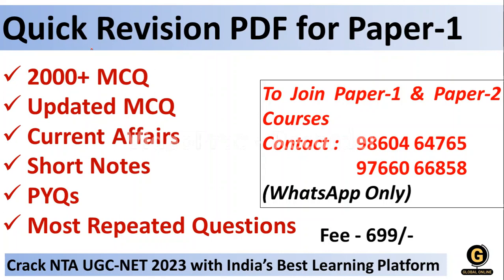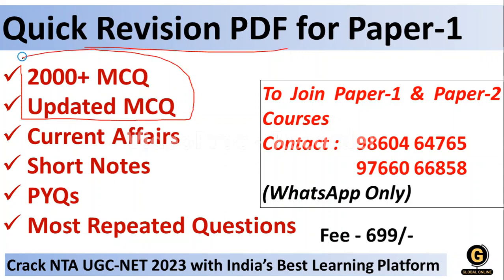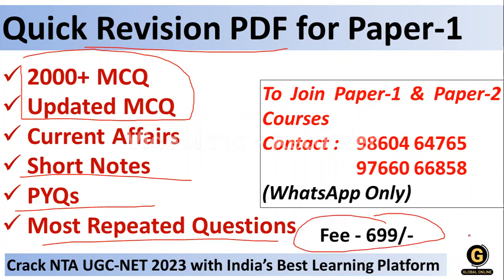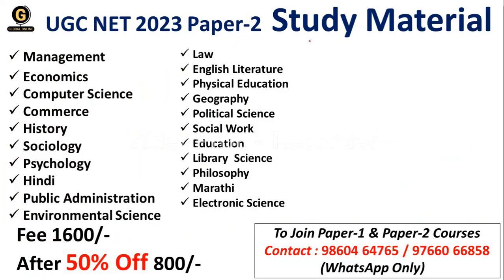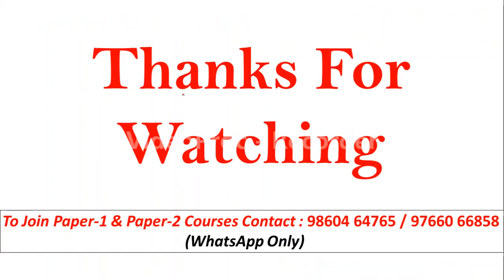Global Online has come up with a Quick Revision PDF for Paper One — 2000 plus updated current affairs MCQs, short notes on all units, previous year questions, and most repeated questions, all for a one-time payment. Download the Global Online app from the Play Store or contact the numbers on screen. Global Online also provides study material for Paper Two with notes and MCQs in all subjects. Thank you for watching and all the best!